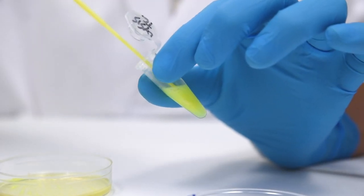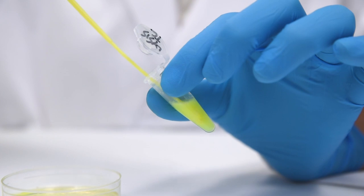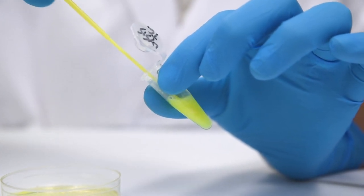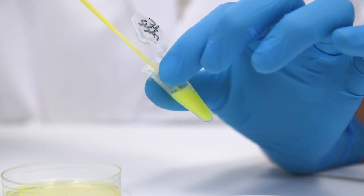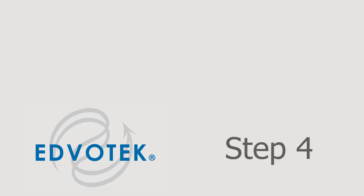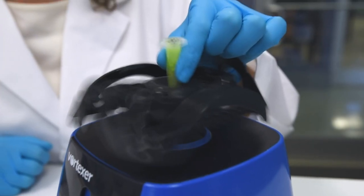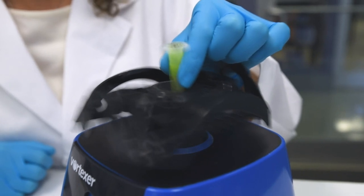Step 3: Twirl the loop containing the green colonies into the tube containing the lysis buffer. Twirl vigorously until the cells are dislodged into the buffer.